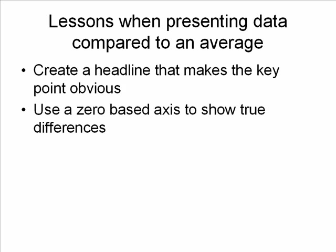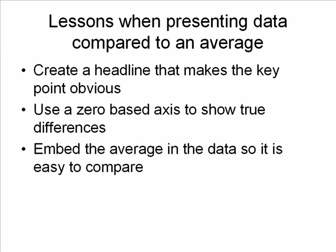When you're showing results, make sure that the differences being shown visually are true differences. So always start with a zero-based axis on the measurement axis — that could be vertical or horizontal depending on the type of graph or chart you're using. Make sure the differences are true, otherwise people will come to conclusions that are not actually correct.